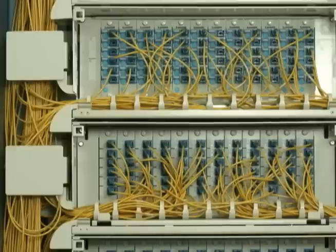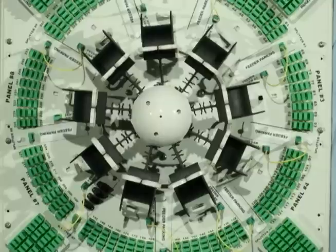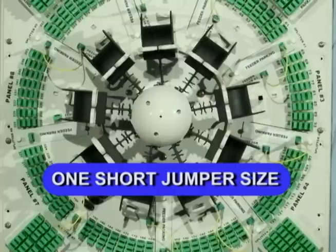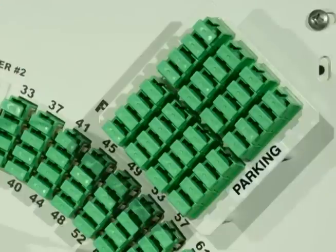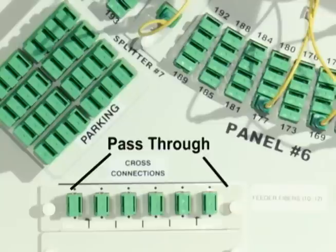Traditional block matrix splitter patching systems require complex routing of many long jumpers in confined areas, often resulting in a tangled mess as customers are randomly connected. The Orbital Fiber Distribution Cabinet solves the usual routing problems with its radial patching field. Leveraging the geometric simplicity of the circle, one short jumper size can serve all patching scenarios with minimal slack management requirements. The orbital cabinet also has spare parking for up to 128 connections and a pass-through feature which allows fibers to conveniently pass through the faceplate onto the next cabinet.